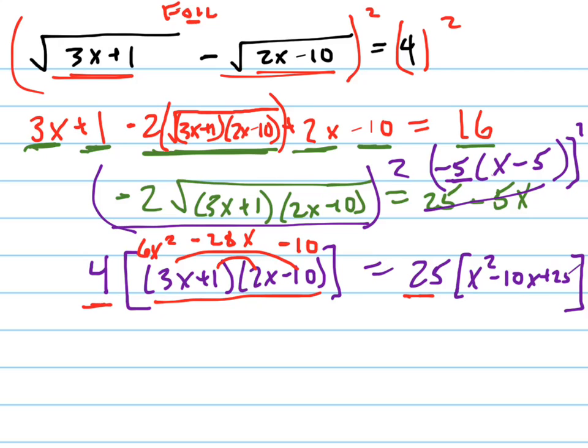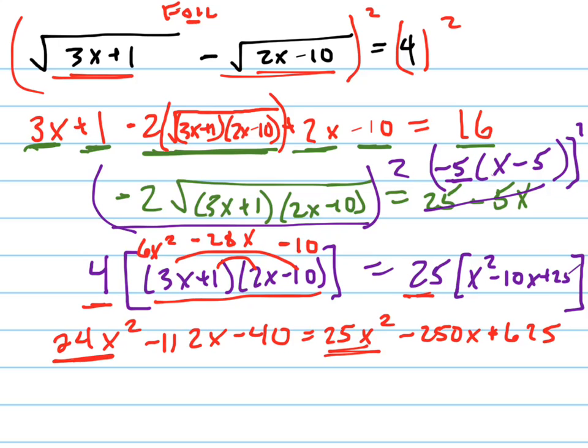And then when I distribute the 4 and the 25 in, I'm going to get 24x squared minus 112x minus 40 equals 25x squared minus 250x plus 625. Again, it looks ugly, but it's actually not bad because now I'm going to subtract the 24x to the other side, which is just going to leave me with x squared. I'm going to add 112x to both sides, which is going to give me 138x. I'm going to add 40 to the right side, which is going to give me 665. There's my equation.